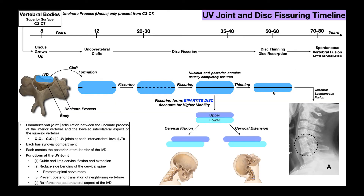Eventually the disc can become so thin that the vertebral bodies come very close together and undergo spontaneous vertebral fusion, most common at the lower levels of the cervical spine. In the radiograph shown, two cervical vertebrae whose disc became so thin that the bodies fused together — a non-surgical fusion that happens spontaneously over time without any surgical intervention.